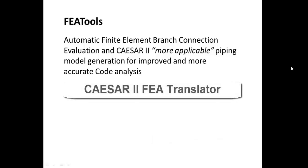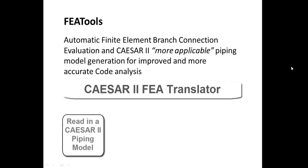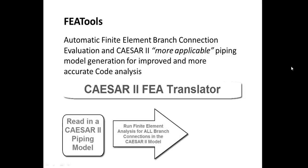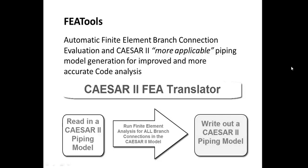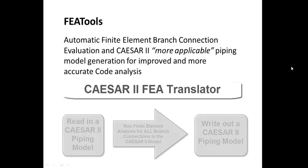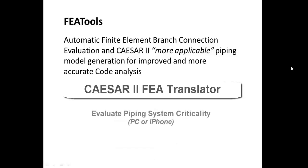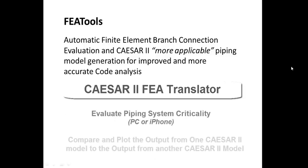The FEA Translator performs a variety of functions. It basically reads in a CSER II model, runs a finite element analysis of each branch connection in that CSER II model, and then builds a more applicable CSER II model using SIFs and flexibilities from the finite element calculations. This higher-level translator also helps evaluate the criticality of piping systems based on general properties and lets the user compare one CSER II output to another CSER II output.